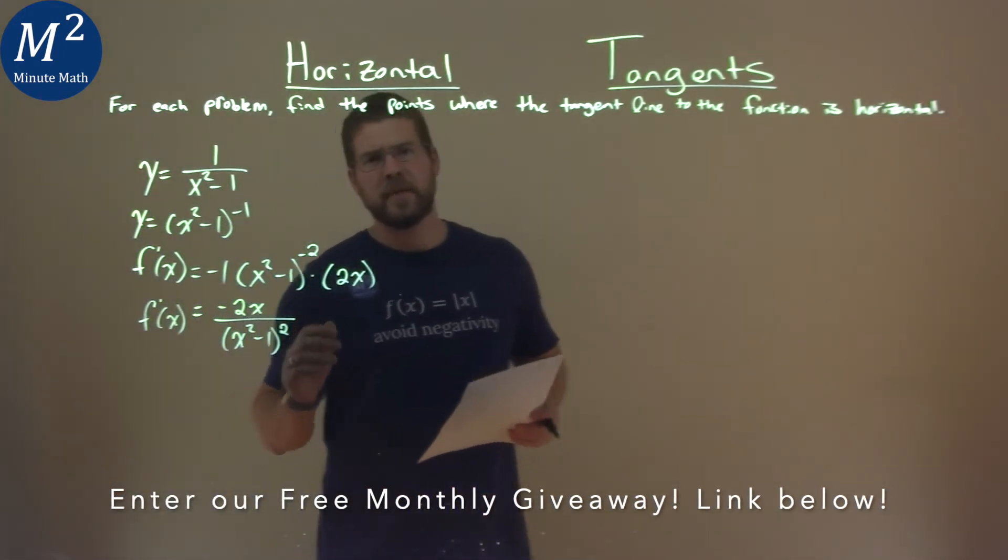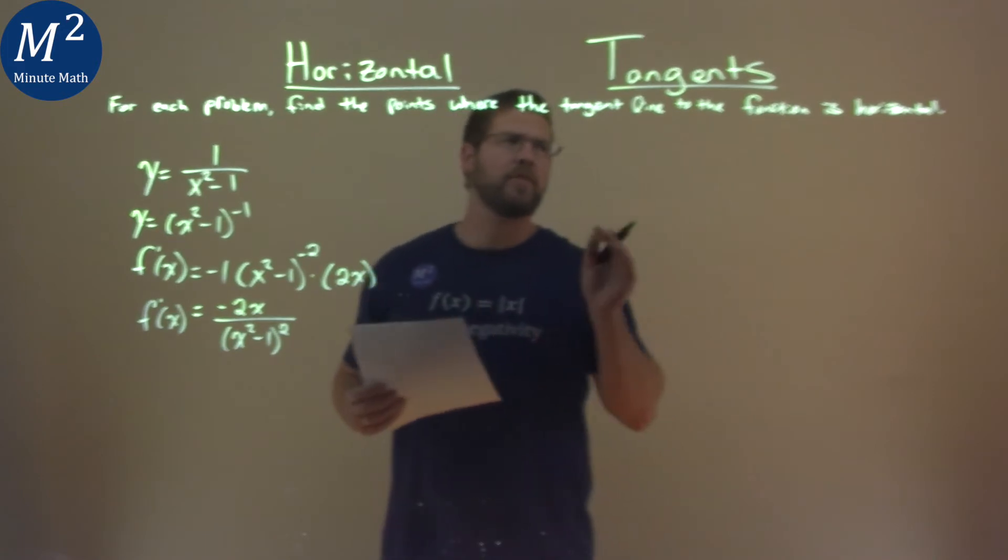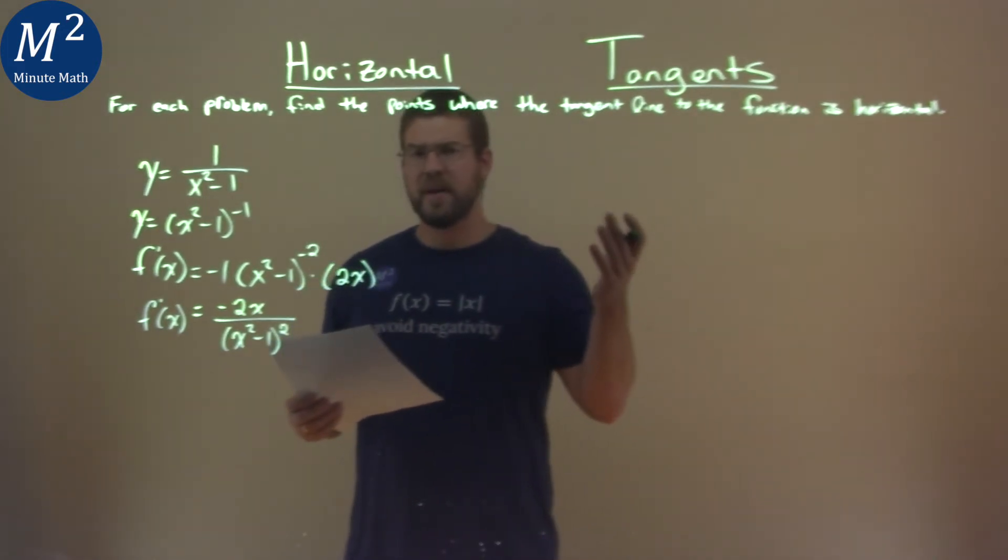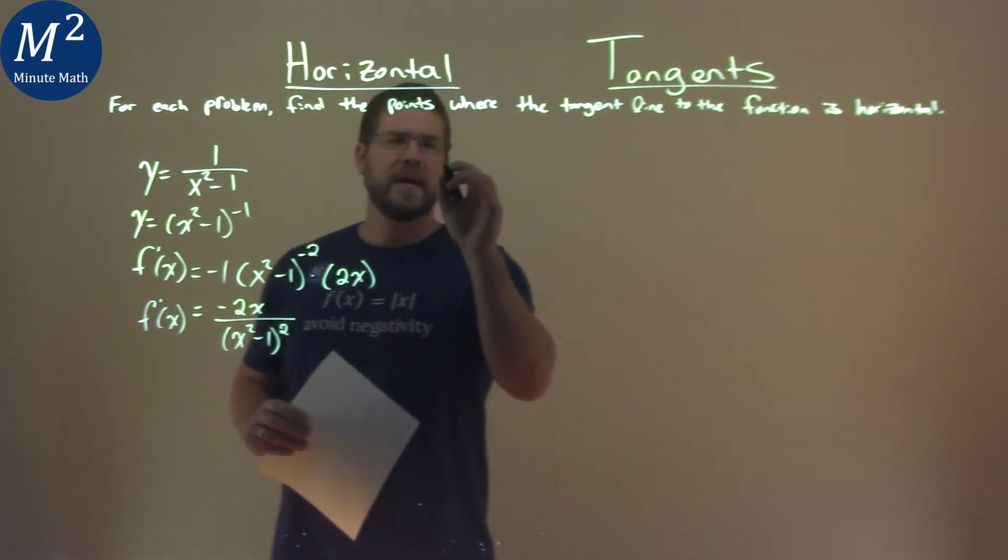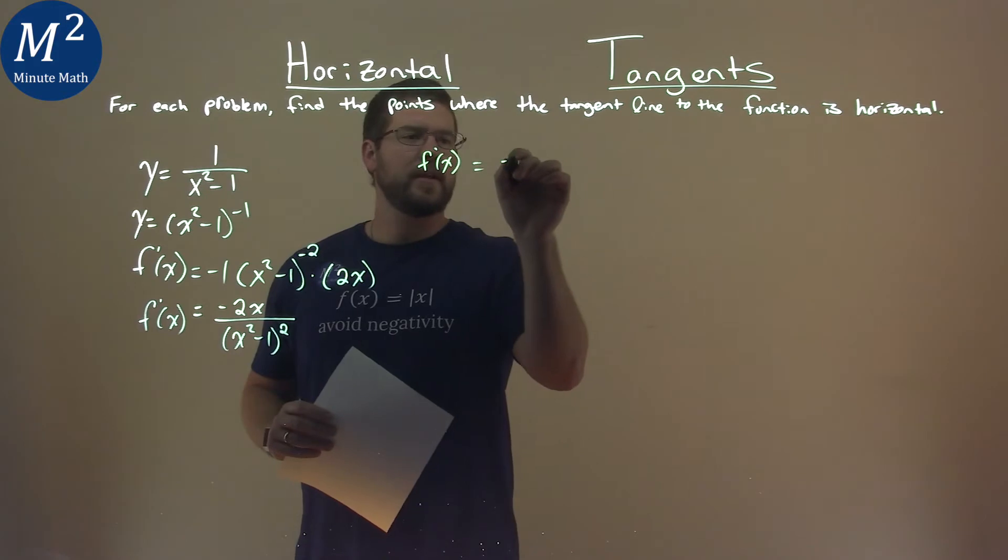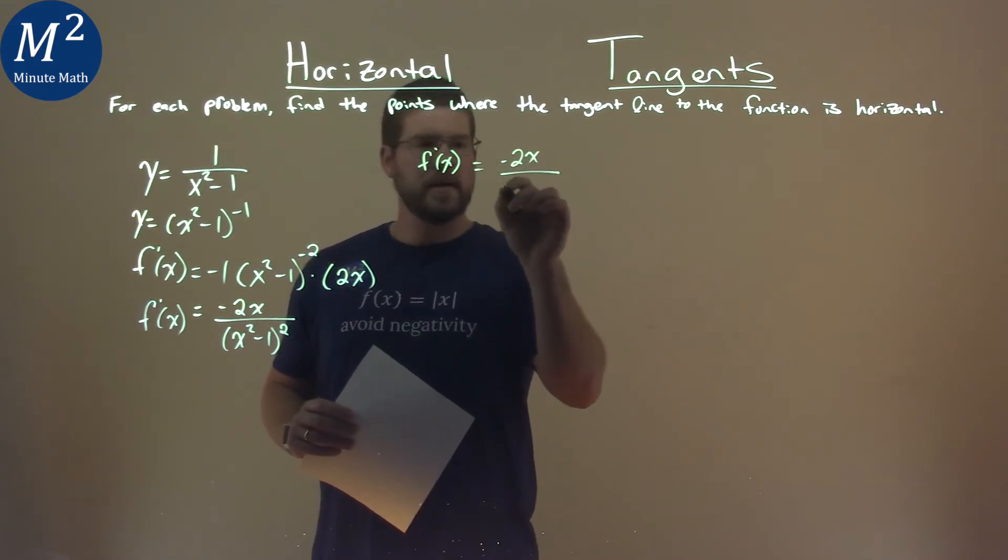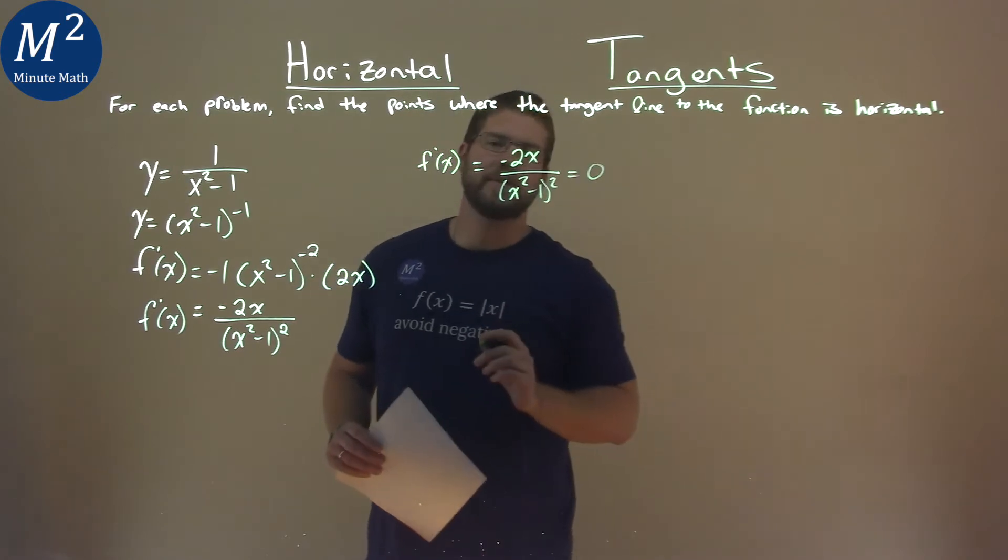All right, we have our derivative, and our derivative tells us the slope of the tangent line, and we want to find where this function is horizontal, where the slope of the tangent line is equal to 0. So we take our derivative, f prime of x equals negative 2x over x squared minus 1 squared, and we're seeing where it's equal to 0.